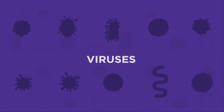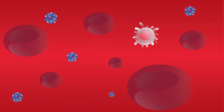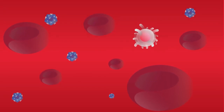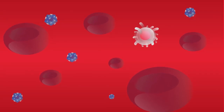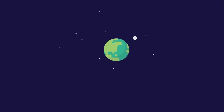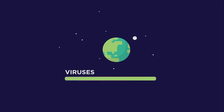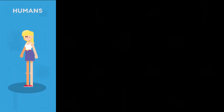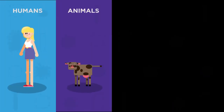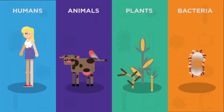They come in many different shapes and are present wherever there are cells to infect. In fact, viruses are the most common biological unit on earth, outnumbering all other types combined. Viruses can infect humans or animals, plants and even bacteria.